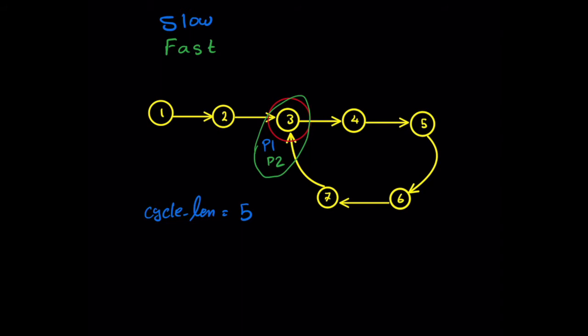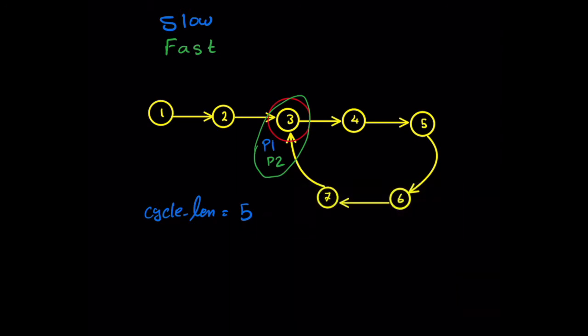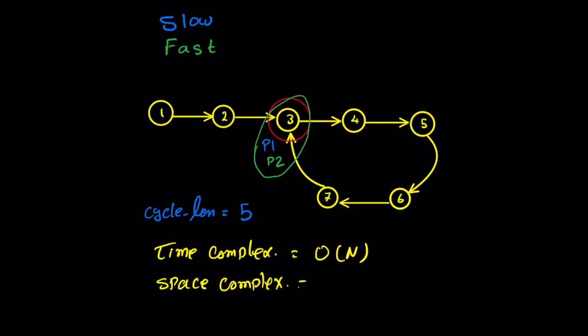What would be the time complexity of this algorithm? In the worst case we are traversing and visiting all nodes, so the time complexity is O(n), where n is the total number of nodes in the list. The space complexity is O(1) — we just use two pointers for slow and fast, and two pointers for pointer one and pointer two, so we are using constant space.